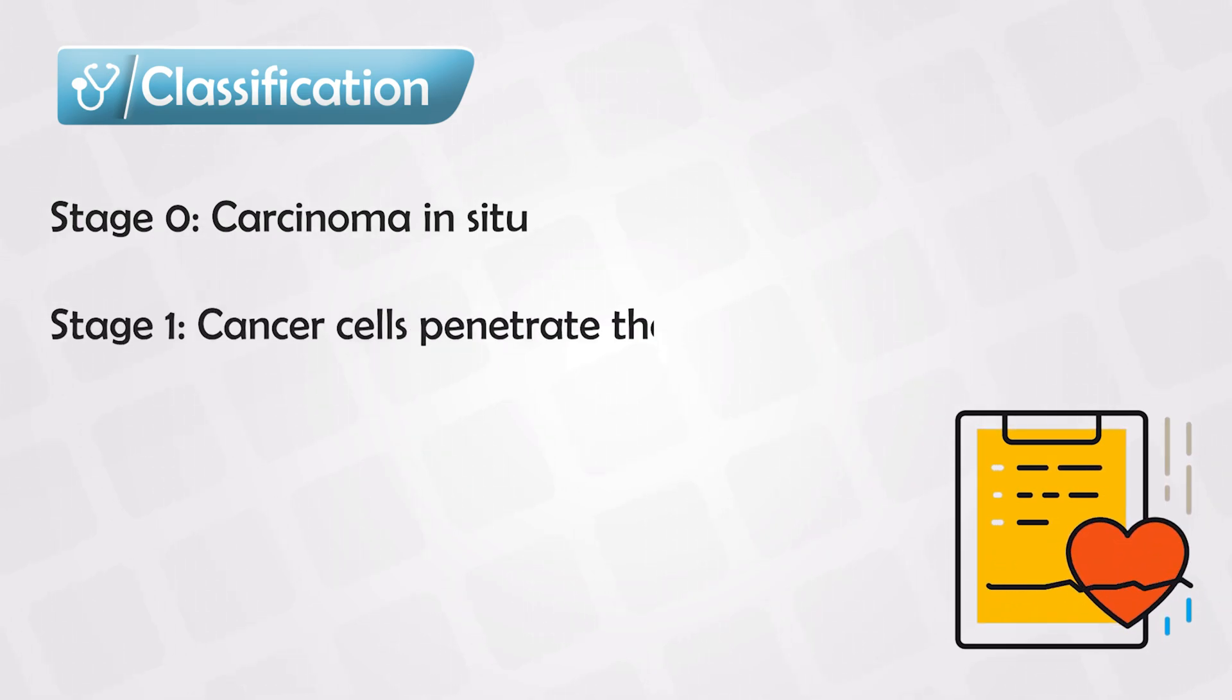In stage 1, these abnormal cells become cancerous and they penetrate the lining area, so they penetrate the mucosa and they extend into the muscular layer of the colon.